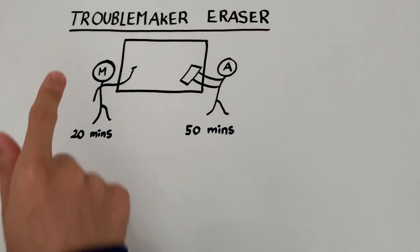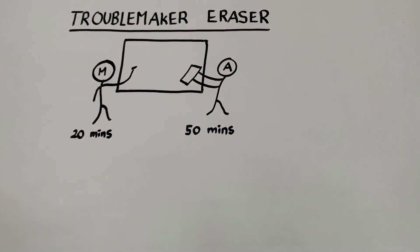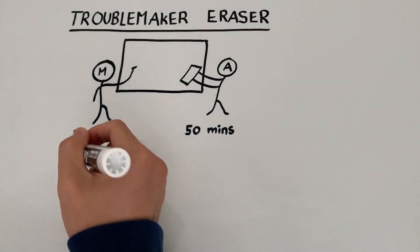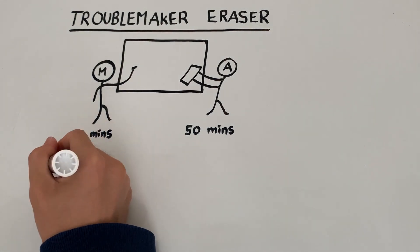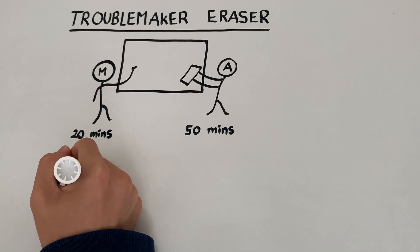So, let's start with Mark. If Mark can cover an entire board in 20 minutes, then that means each minute Mark is covering 1/20th of the board.